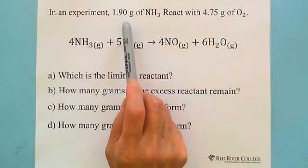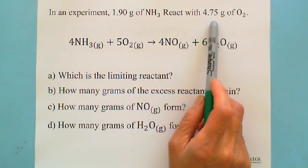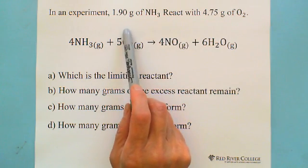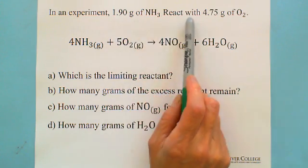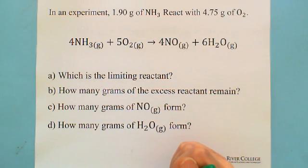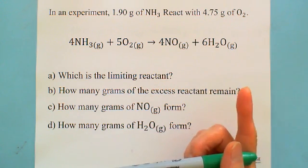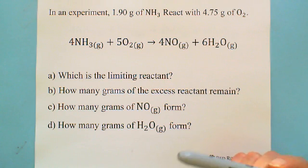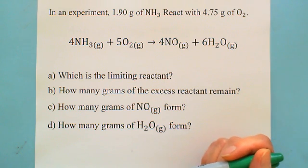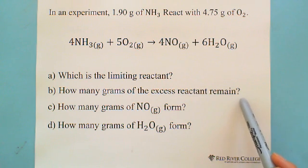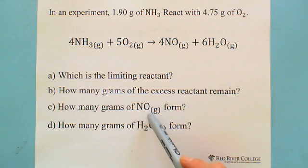So this question gives you 1.90 grams of ammonia reacting with 4.75 grams of oxygen. When you are given two amounts, that means one must be limiting and the other is excess. The question asks: A) which is the limiting reactant? B) how many grams of excess reactant remain? C) how many grams of nitrogen monoxide? D) how many grams of water vapor?